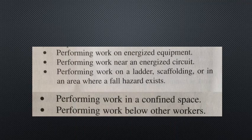Accidents are normally caused by a combination of events. First, there must be a potentially hazardous situation. Some examples include performing work on energized equipment, performing work near an energized circuit, performing work on a ladder, scaffolding, or in an area where a fall hazard exists, performing work in a confined space, and performing work below other workers. The first step in preventing accidents is to identify the potential hazards before beginning work.